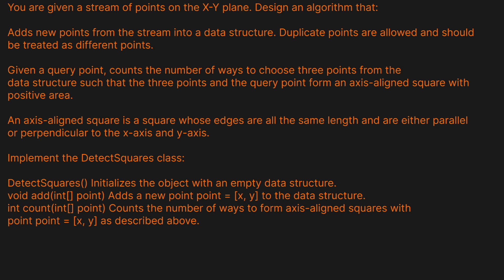You are given a stream of points on an XY plane. Design an algorithm that adds new points from a stream into a data structure. Duplicate points are allowed and should be treated as different points. Given a query point, count the number of ways to choose three points from the data structure such that the three points and the query point form an axis-aligned square with positive area. An axis-aligned square is defined as a square whose edges are all the same length and are either parallel or perpendicular to the X-axis and the Y-axis.